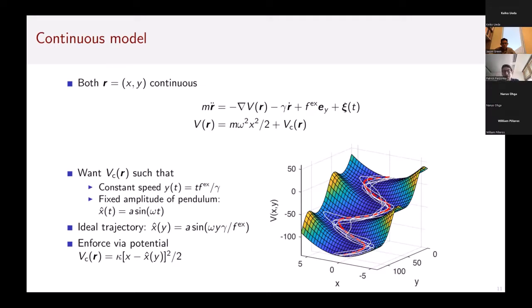You could still argue that this is somehow an artificial setting where I use both a discrete degree of freedom and a continuous one. Is the TUR still violated if I use a fully continuous setting? If I have two degrees of freedom x and y that are subject to some potential and where I have an external force acting in direction y. Inspired by a pendulum clock, I want that x still undergoes an oscillating motion, so I use a harmonic oscillator potential for x.